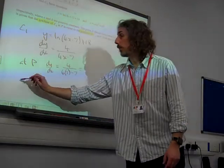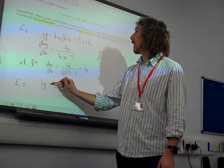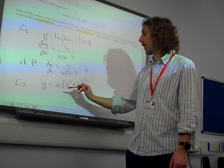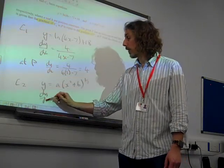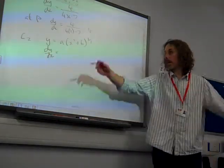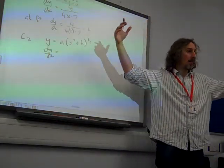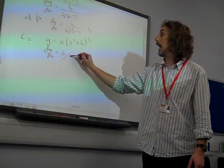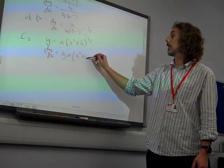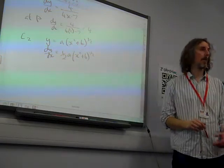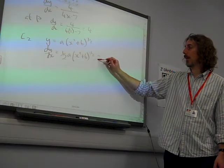C2, curve 2. y equals a times (x squared plus b) to the half. This is another chain rule question. So if we differentiate the whole thing, a times something to the half will be a half a times the something to minus a half. Multiply by the derivative of the inside bit, so times 2x.